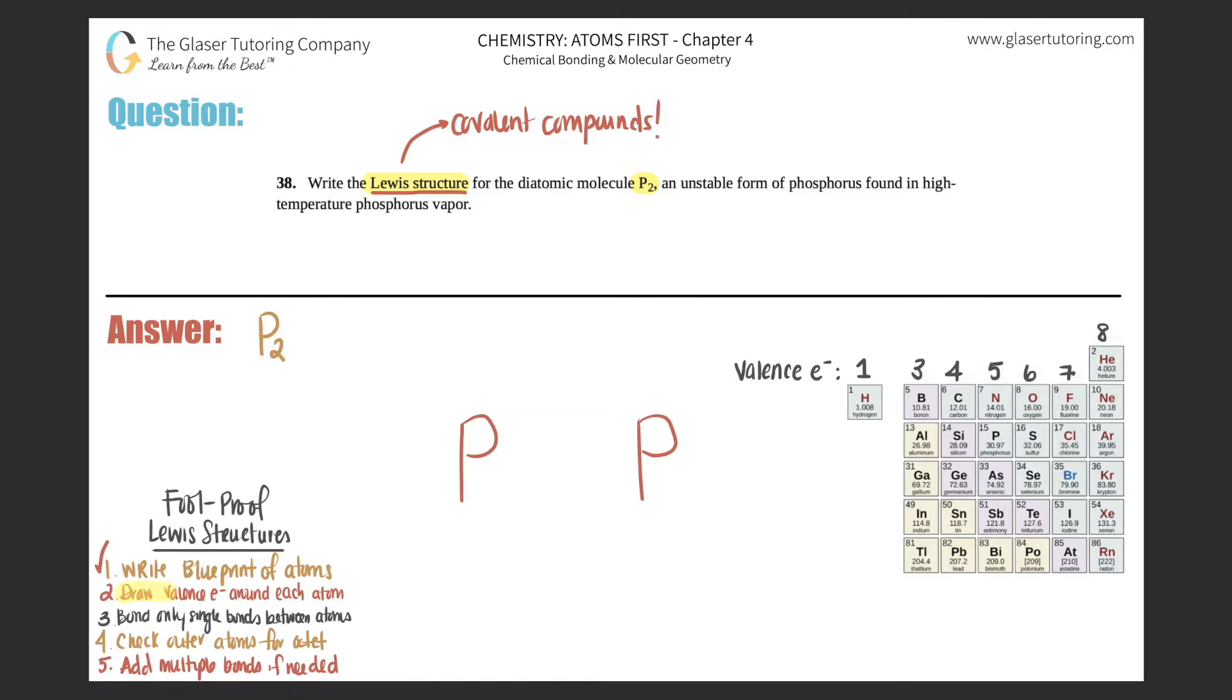The next thing when you're done with your blueprint is you want to draw valence electrons around each atom. So we need to know how many valence electrons phosphorus has. Well, phosphorus has five valence electrons. So I'm going to write them nicely around each phosphorus and you will write them for as many phosphorus you have. So in this case, I have two. So I'm going to say one, two, three, four, five, and I'll do the other one in a different color. One, two, three, four, five. It does not matter where you start, just as long as you have five dots around each phosphorus. So two is done.